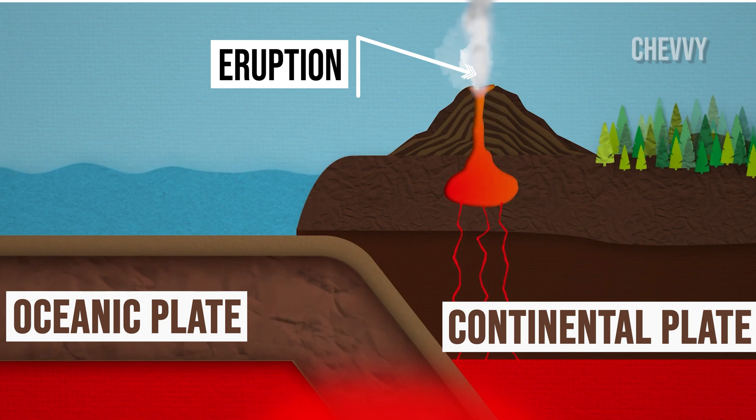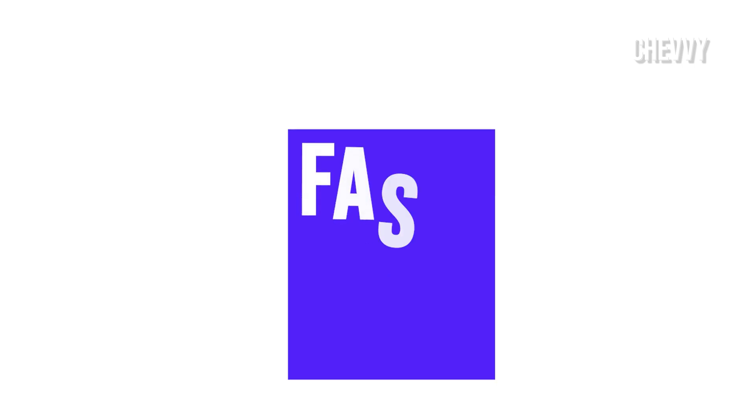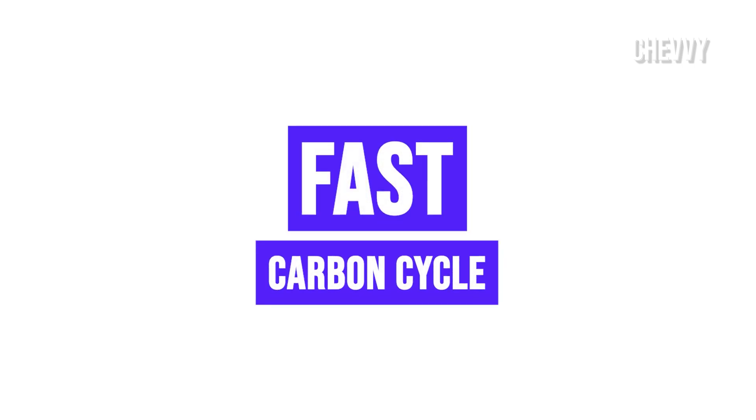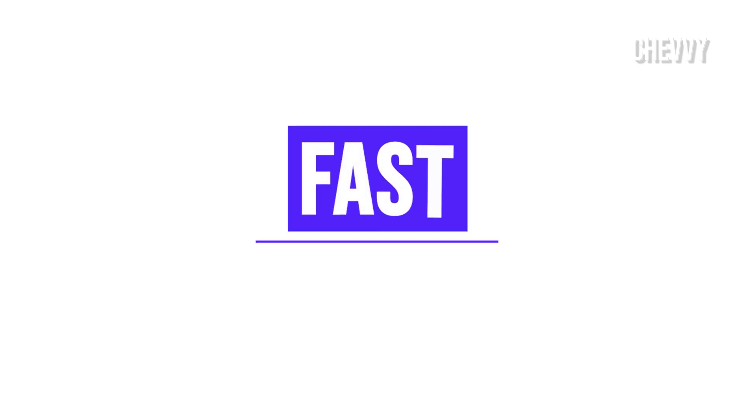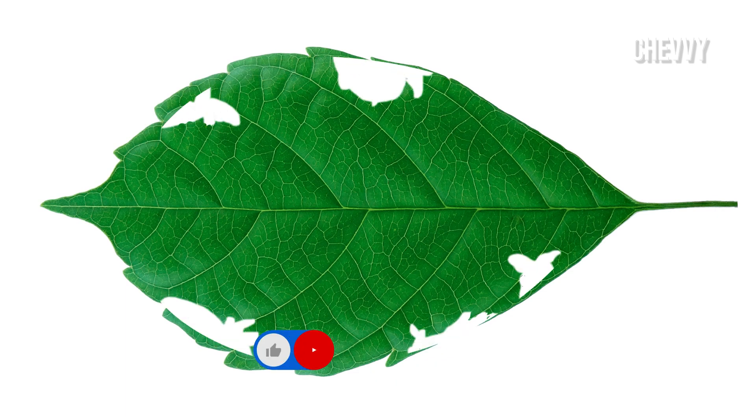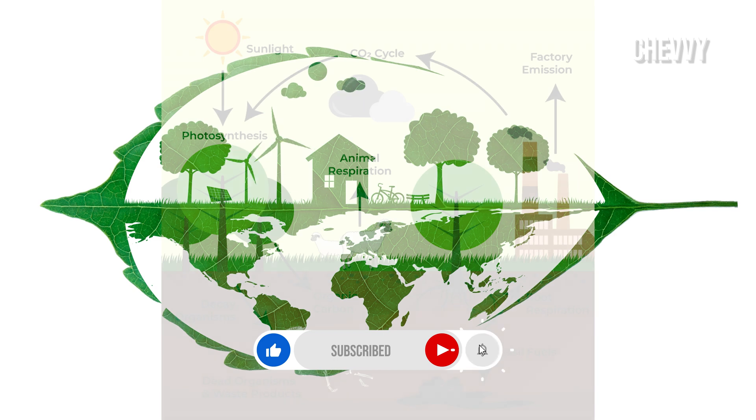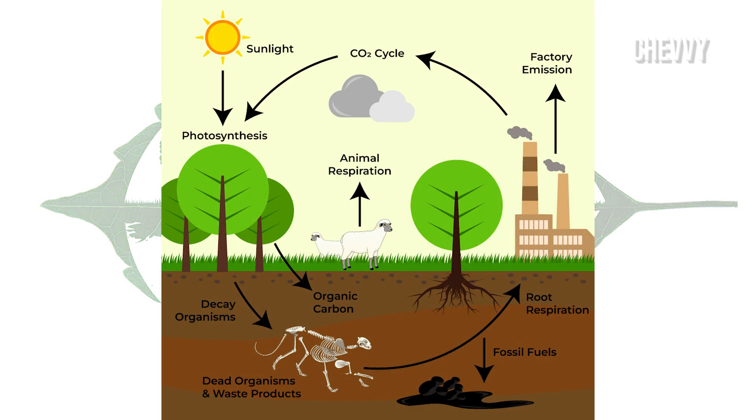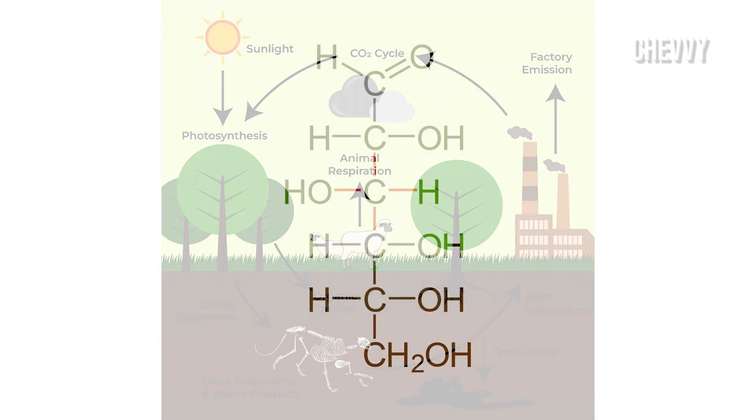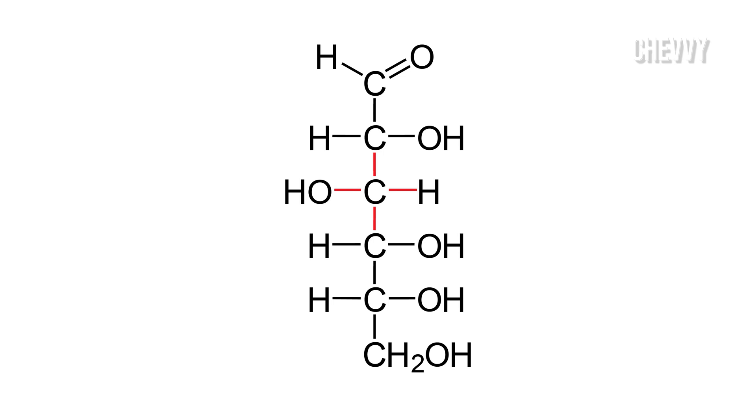This cycle is termed as the short carbon cycle. The fast carbon cycle is the transformation of carbon by Earth's living creatures. Carbon is vital in life because of its capacity to generate four bonds per atom.